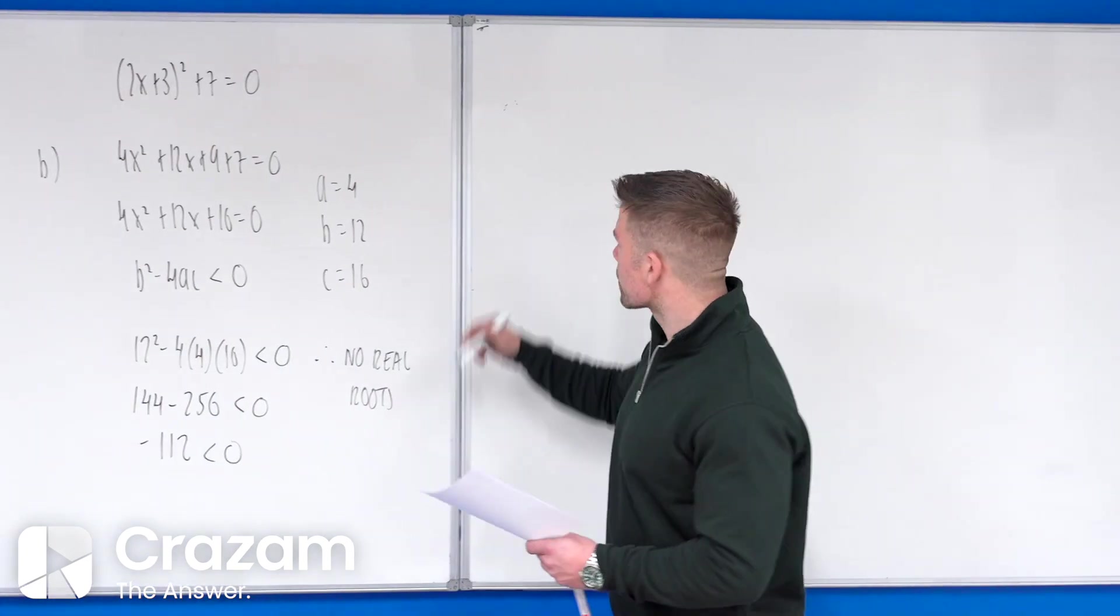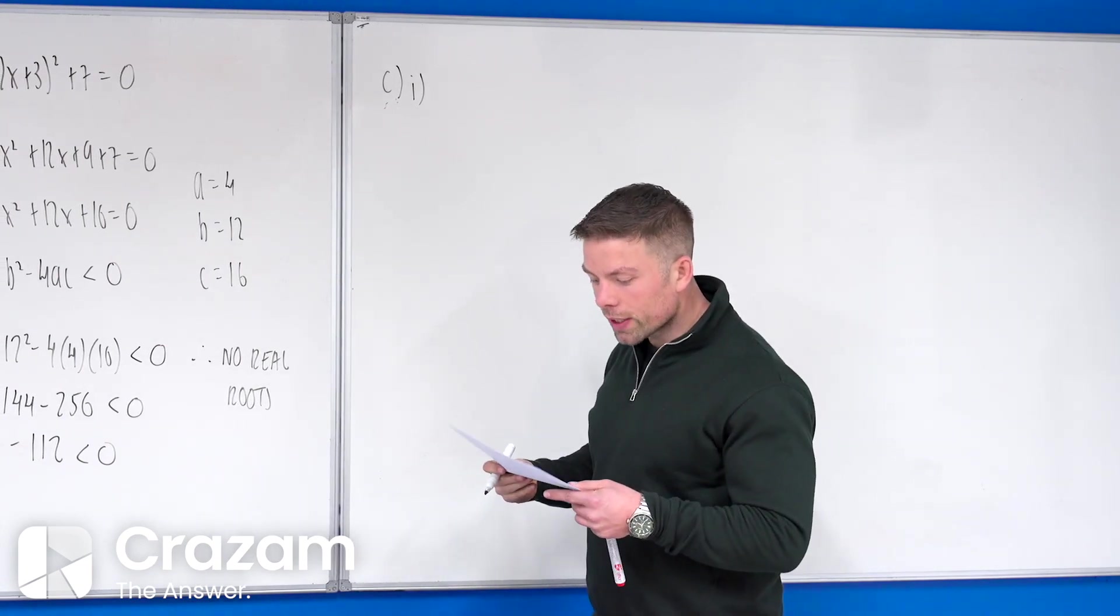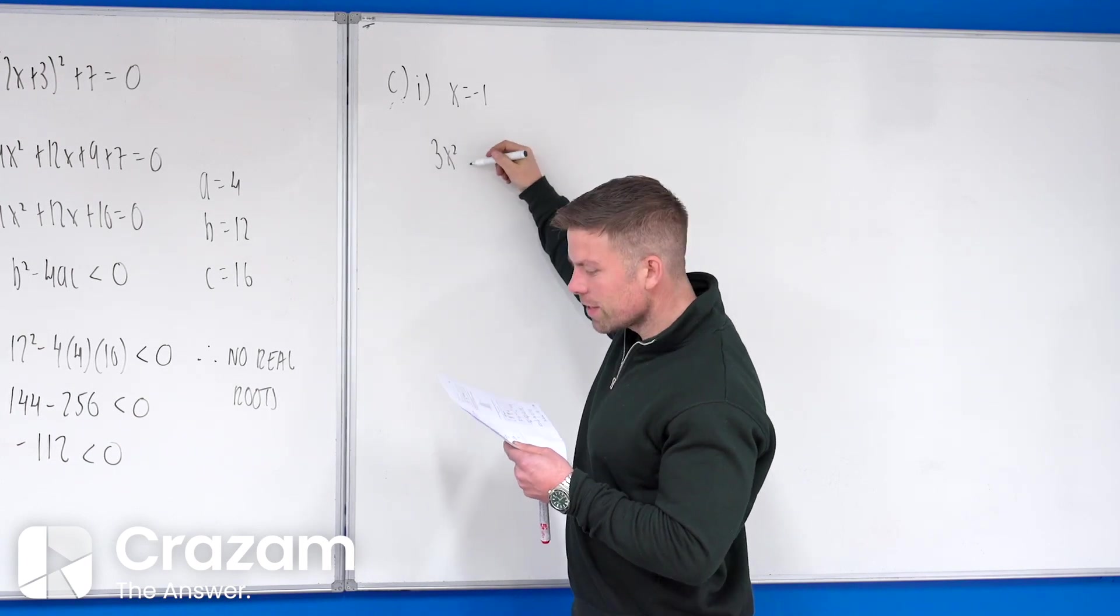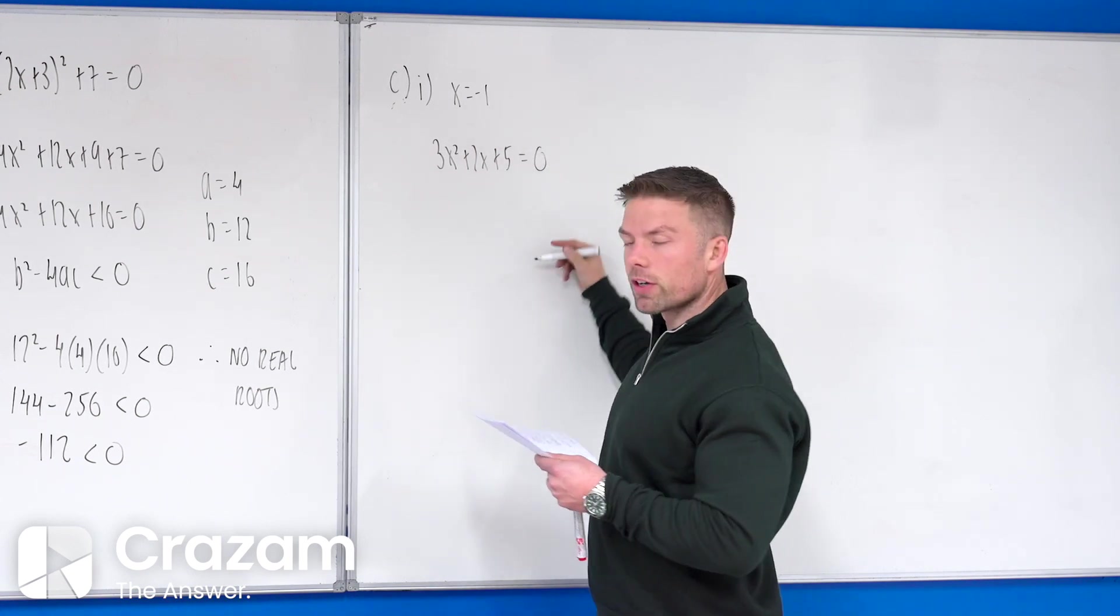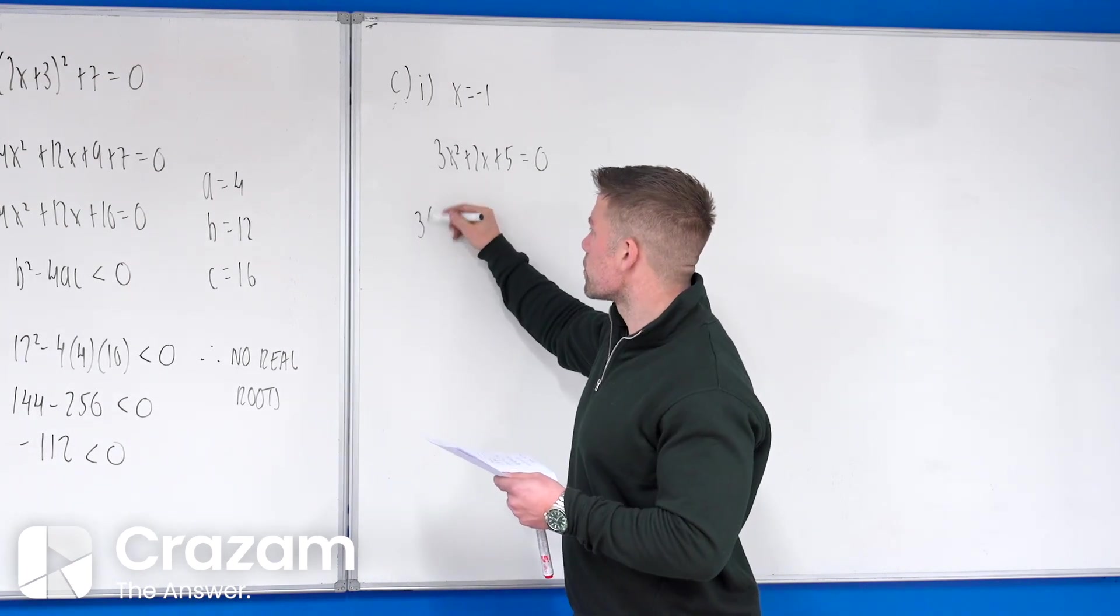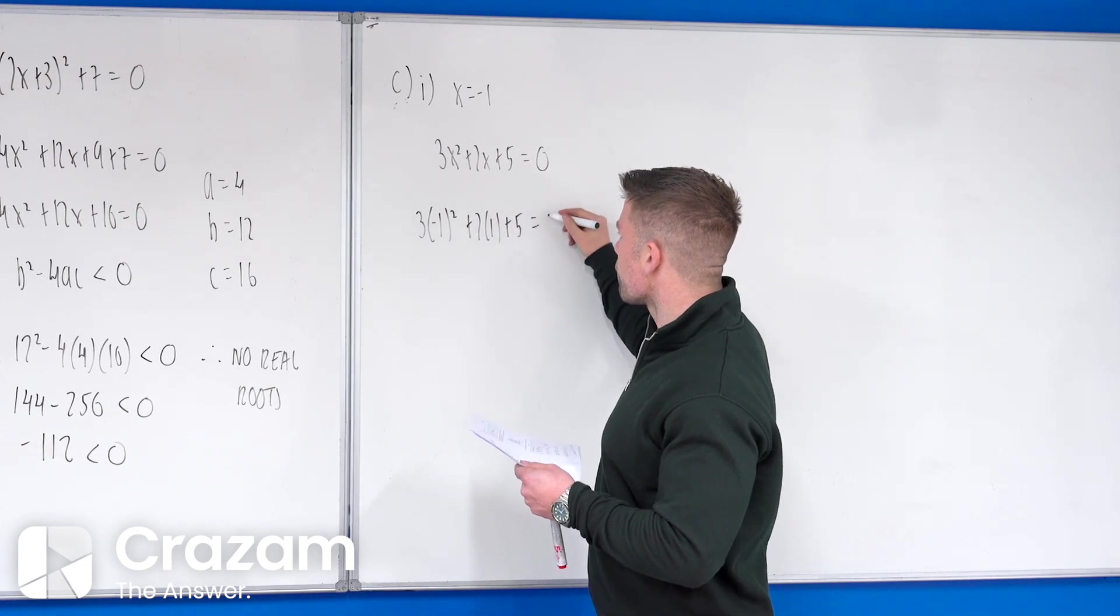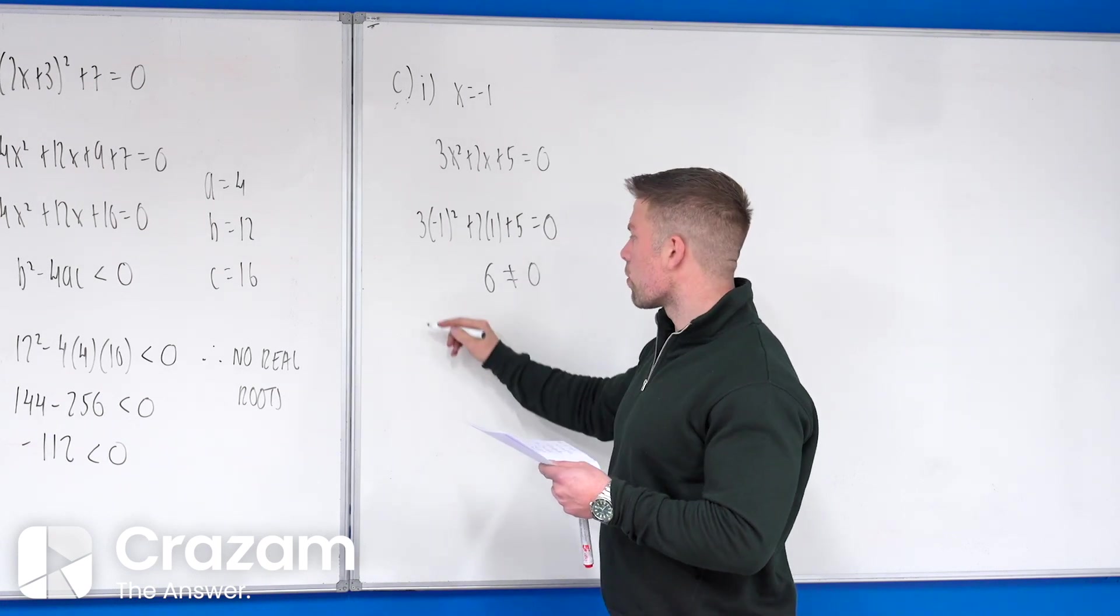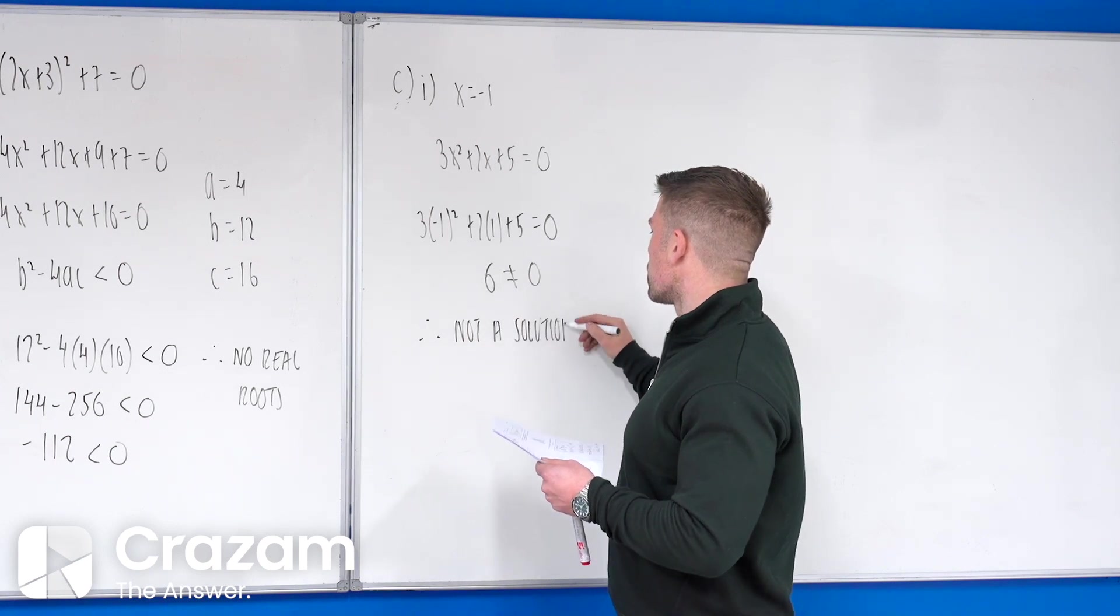it says show that, be careful of that, show that x equals to minus 1 is not a solution of this. The easiest way to show it's not a solution is to sub it in, and it won't equal to 0. If you had a root, if it was a solution, you'd get 0 equals to 0. So if you put that into your calculator, 3 times minus 1 squared plus 2 times minus 1 plus 5 equals to 0. When you put the left-hand side in, you get 6, which is not equal to 0,